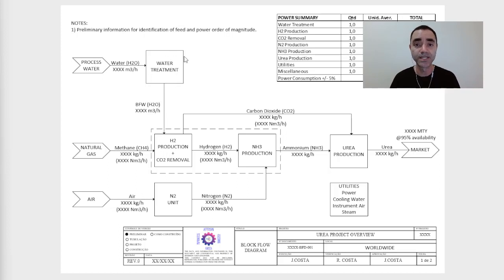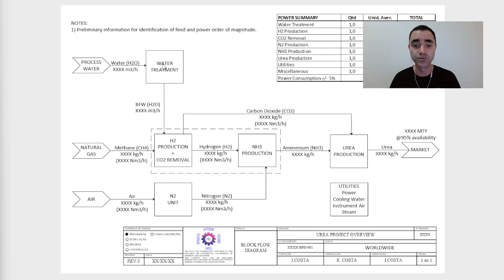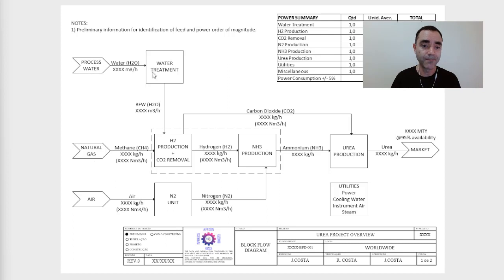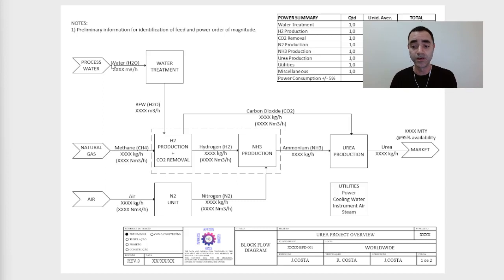This water has a special quality requirement, so I need a water treatment unit — which can be, for instance, reverse osmosis — that will be fed with raw water or process water. In this way, I am able to map the production: the amount of product that must be produced and the amount of raw materials or feed streams needed for my process — in this case, for the urea process.